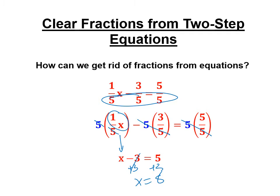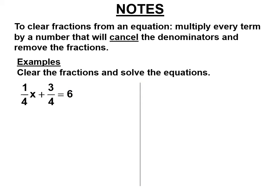So let's learn how to clear fractions from equations. We're going to have to get rid of this 4, so we multiply both entire sides — every term — by 4. The 4s cancel and you get x. The 4s cancel and you get 3. Then you have to do it on the other side too: 4 times 6 is 24. That became a one-step equation. Subtract 3 from both sides: x equals 21.